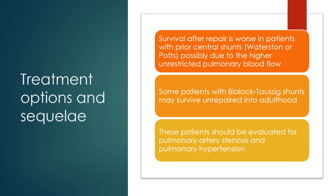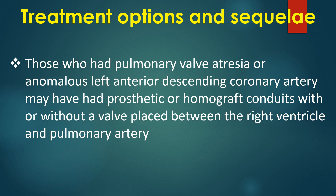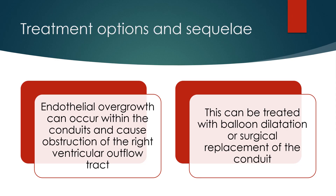Survival after repair is worse in patients with prior central shunts — i.e., Waterston or Potts — possibly due to higher unrestrictive pulmonary blood flow. Some patients with Blalock-Taussig shunts may survive unrepaired into adulthood and should be evaluated for pulmonary artery stenosis and pulmonary hypertension. Those who had pulmonary valve atresia or anomalous left anterior descending coronary artery may have had prosthetic or homograft conduits placed between the right ventricle and pulmonary artery. Endothelial overgrowth can occur within the conduit and cause obstruction, treated with balloon dilatation or surgical replacement of the conduit.